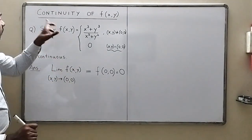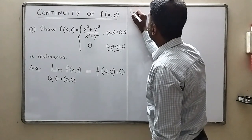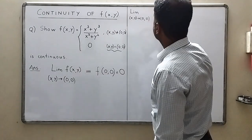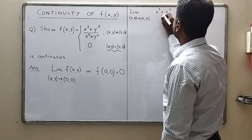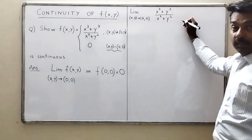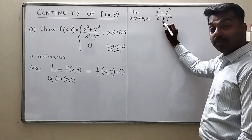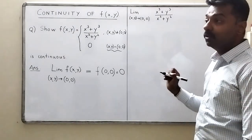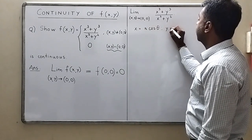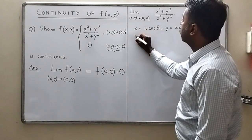Let us try to find the limit of this function as (x,y) tends to (0,0). Our answer should equal zero. We evaluate: limit (x,y)→(0,0) of (x³+y³)/(x²+y²). In our previous videos we learned that whenever x²+y² appears in the denominator, we substitute x = r cosθ and y = r sinθ.